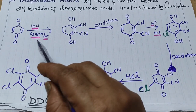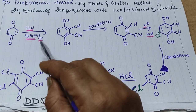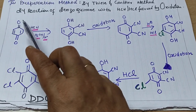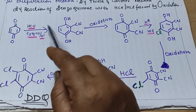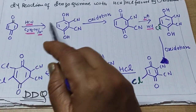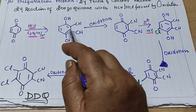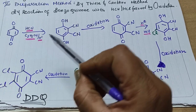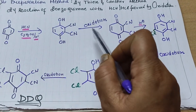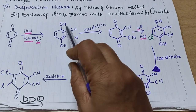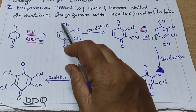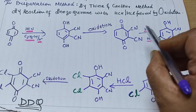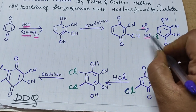We start with benzoquinone. When treated with HCN in the presence of C2H5OH in acidic medium, the oxygen group is converted to OH and cyanide groups are added at the 2nd and 3rd positions. Next, we perform oxidation — removal of hydrogen — so the double bond forms again at those positions.